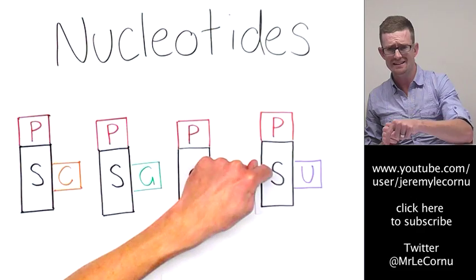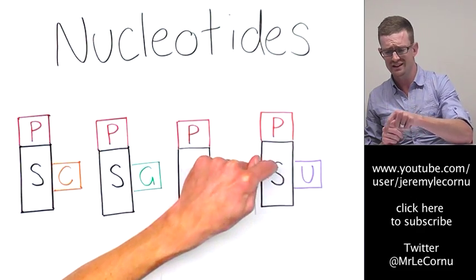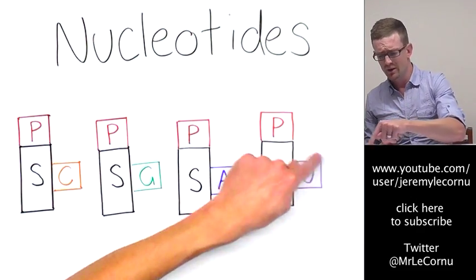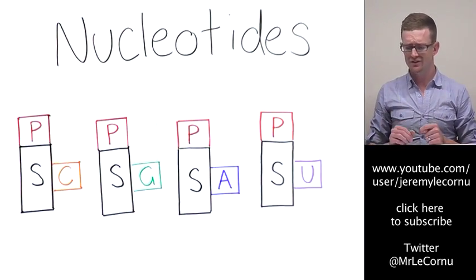The sugars in DNA are deoxyribose, and the sugars in RNA are ribose. But we also have a different base, U instead of T.